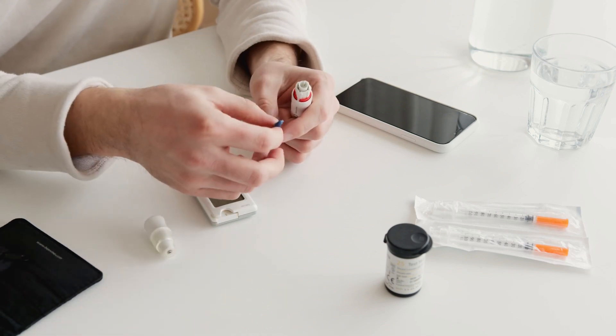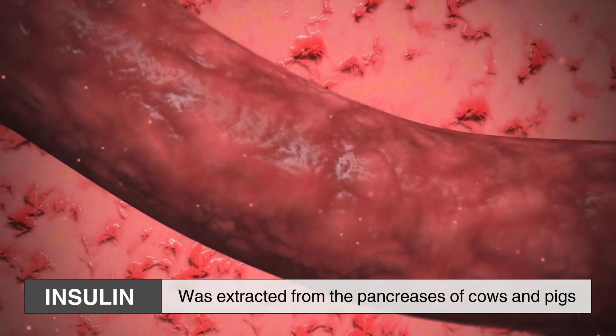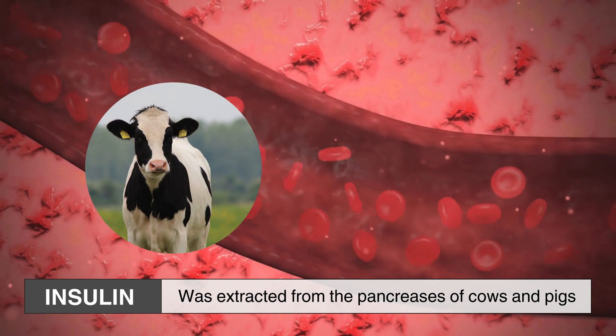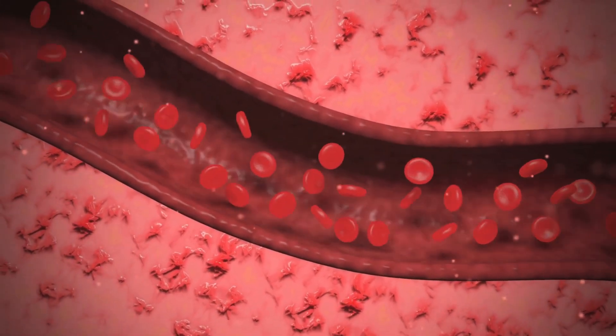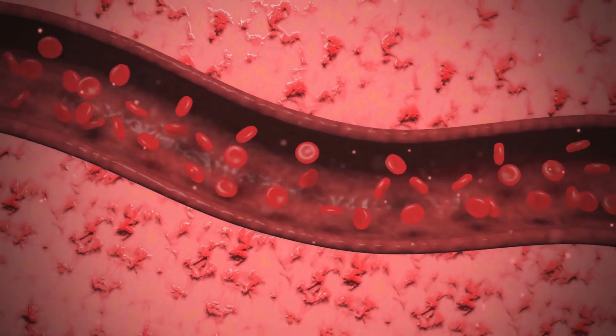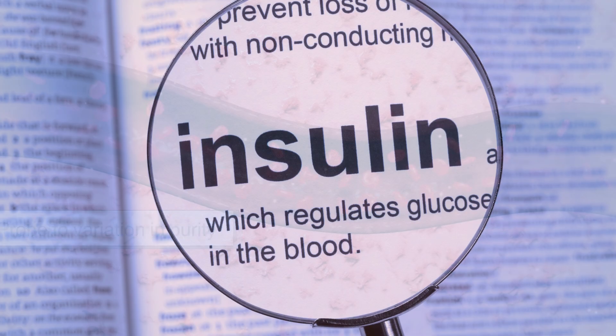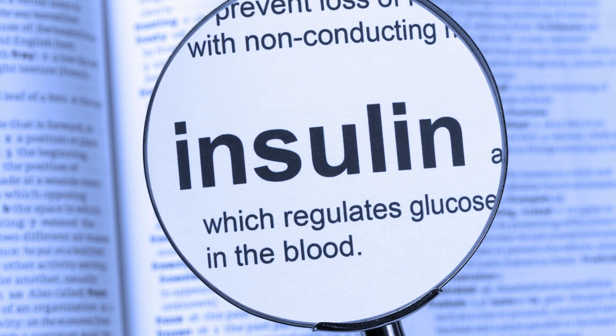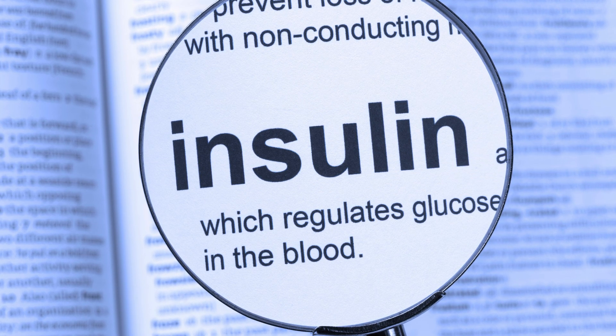To understand how insulin is made today, we must first take a step back in time. Originally, insulin was extracted from the pancreases of cows and pigs, a painstaking process that required harvesting large amounts of animal tissue. This method, though effective for its time, was inefficient, expensive, and prone to variation in purity. The insulin produced from animals was slightly different from human insulin, sometimes triggering immune responses in patients.